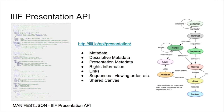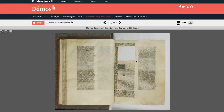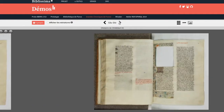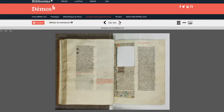The IIIF Presentation API is based on the Shared Canvas data model, in which images and related information are essentially painted onto an abstract space known as a canvas, via W3C web annotations and annotation lists. Typically, a canvas consists of one page or one view of an object, although multiple canvases can be painted onto a single canvas, which is especially helpful for multispectral imaging or images missing content that can be reunified with the same image from a different resource.